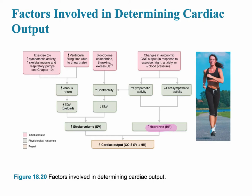There are a lot of factors involved in determining cardiac output. Cardiac output is the total amount of blood pumped out of the heart in one minute. It's calculated by multiplying stroke volume times heart rate: CO equals stroke volume times heart rate.